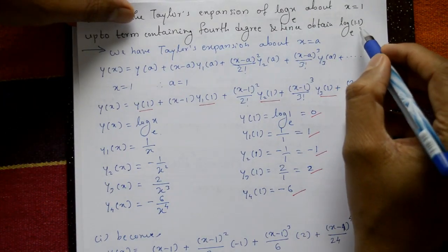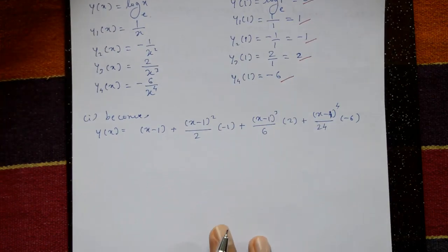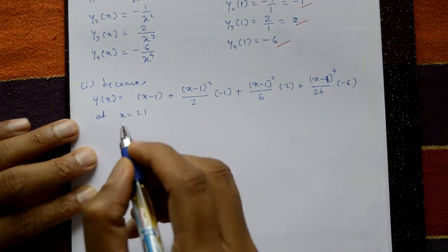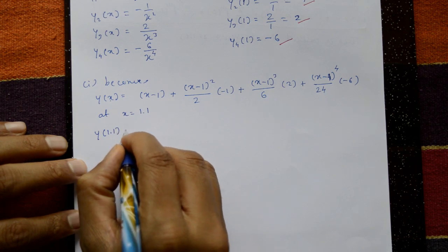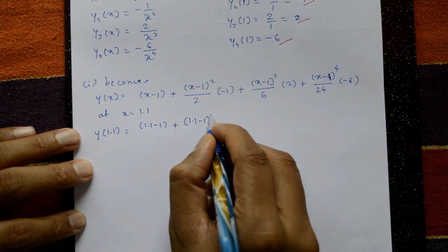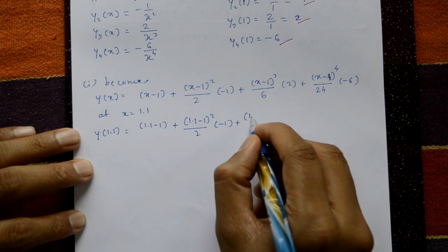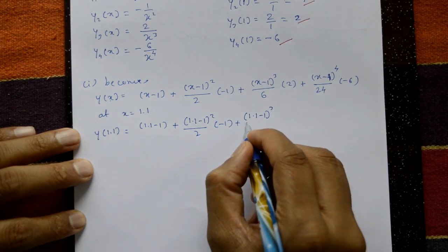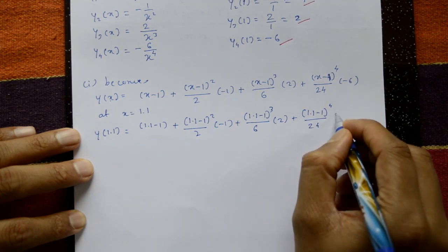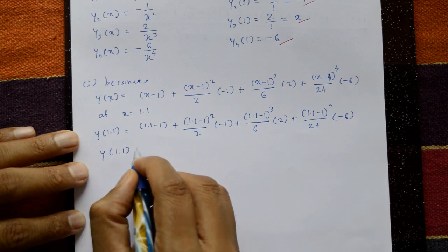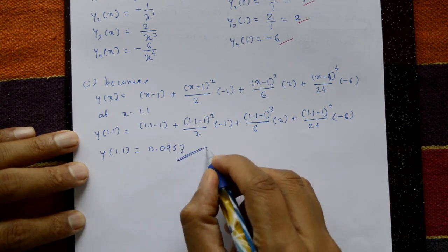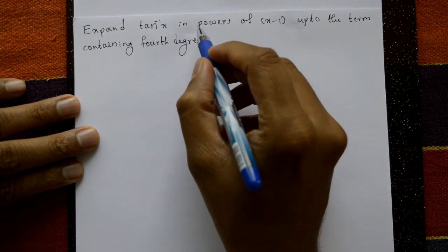To find log(1.1), put x = 1.1: y(1.1) = (0.1) + (0.1)²/2·(−1) + (0.1)³/6·2 + (0.1)⁴/24·(−6). Using calculation, the answer is 0.0953. This is the required answer.